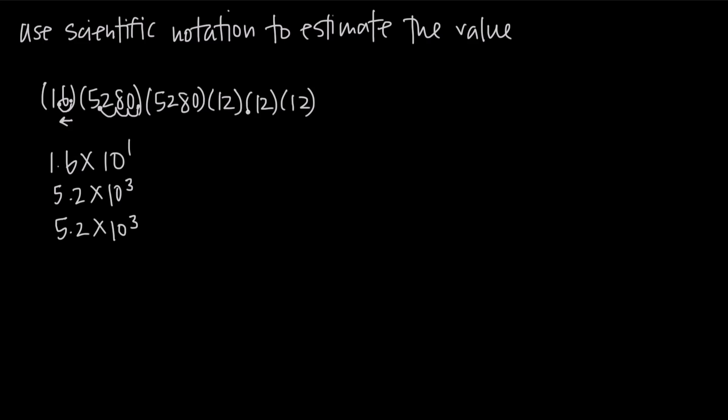Then we have 12, 12, and 12. Our decimal point is right here. We're going to move it over one unit to the left, so we're going to call that 1.2 times 10 to the first. Then we have that factor three times, so 1.2 times 10 to the first and 1.2 times 10 to the first.